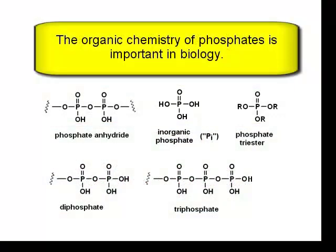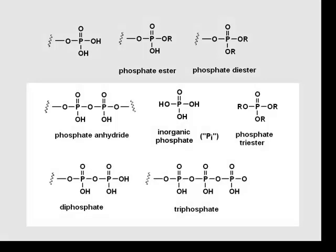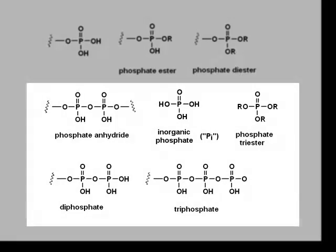Phosphate groups are important in biological systems — important in our bodies. Under those physiological pHs, you'll often find that equilibrium mixture of the anions of phosphoric acid as their salts, referred to as inorganic phosphate, and it's often abbreviated as Pi. It is an associating equilibrium system of polybasic acids.